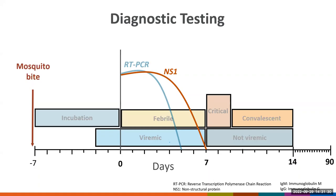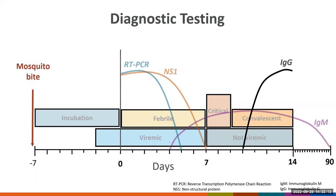NS1 is another molecular test that looks for the non-structural protein of the virus and is usually positive during the first days of disease. For serological testing, IgM usually becomes detectable around day four or five — testing before this time can yield a negative result even if the patient really has dengue. IgM can stay positive for several weeks to around three months, sometimes longer. A convalescent specimen is needed to make a diagnosis when the initial IgM is negative and disease was not confirmed with a molecular test. IgG is detectable around day eight to ten and persists for years or even for life; IgG alone does not indicate active dengue infection.